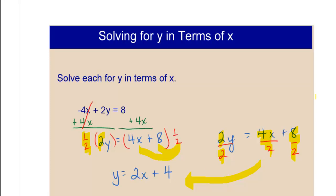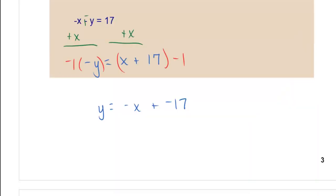You can show your steps however you want to show them, as long as you show me what you're doing to both sides of your equation. In this next equation, we had to add x to both sides to get rid of the negative x with our opposite property, and we end up with negative y equals x plus 17.